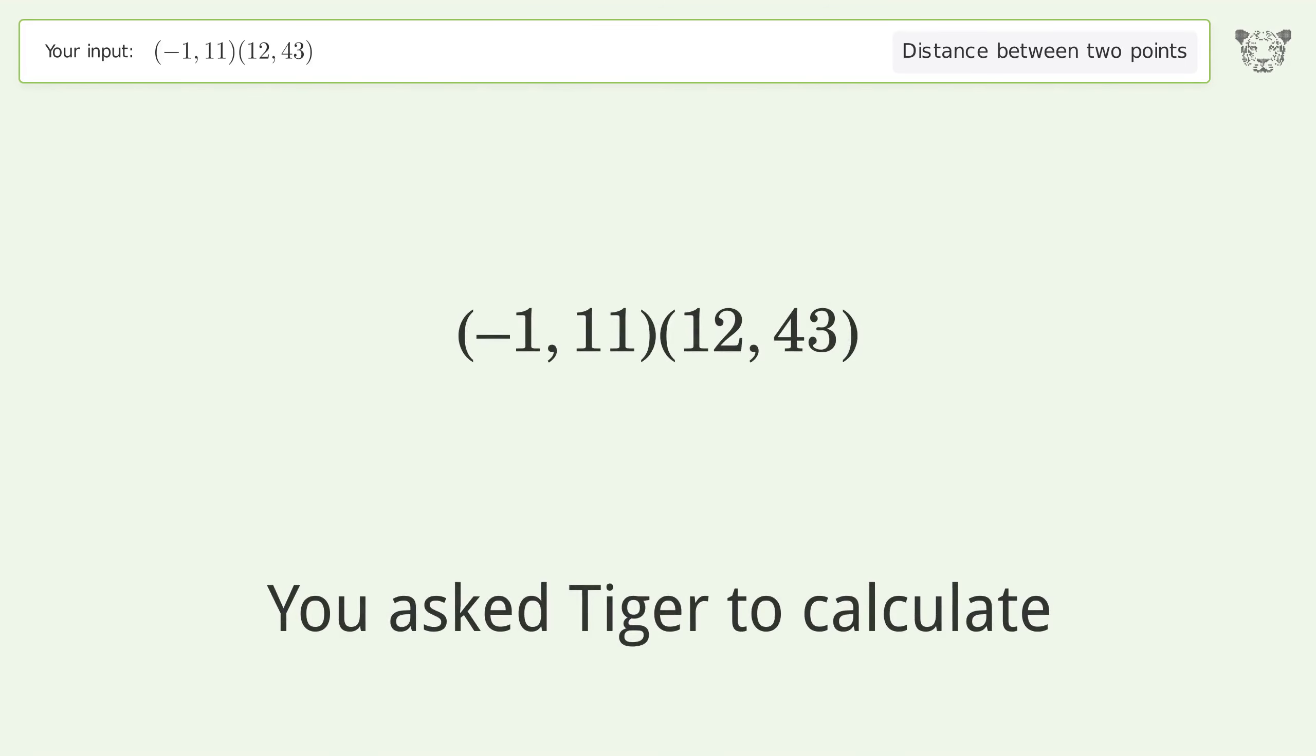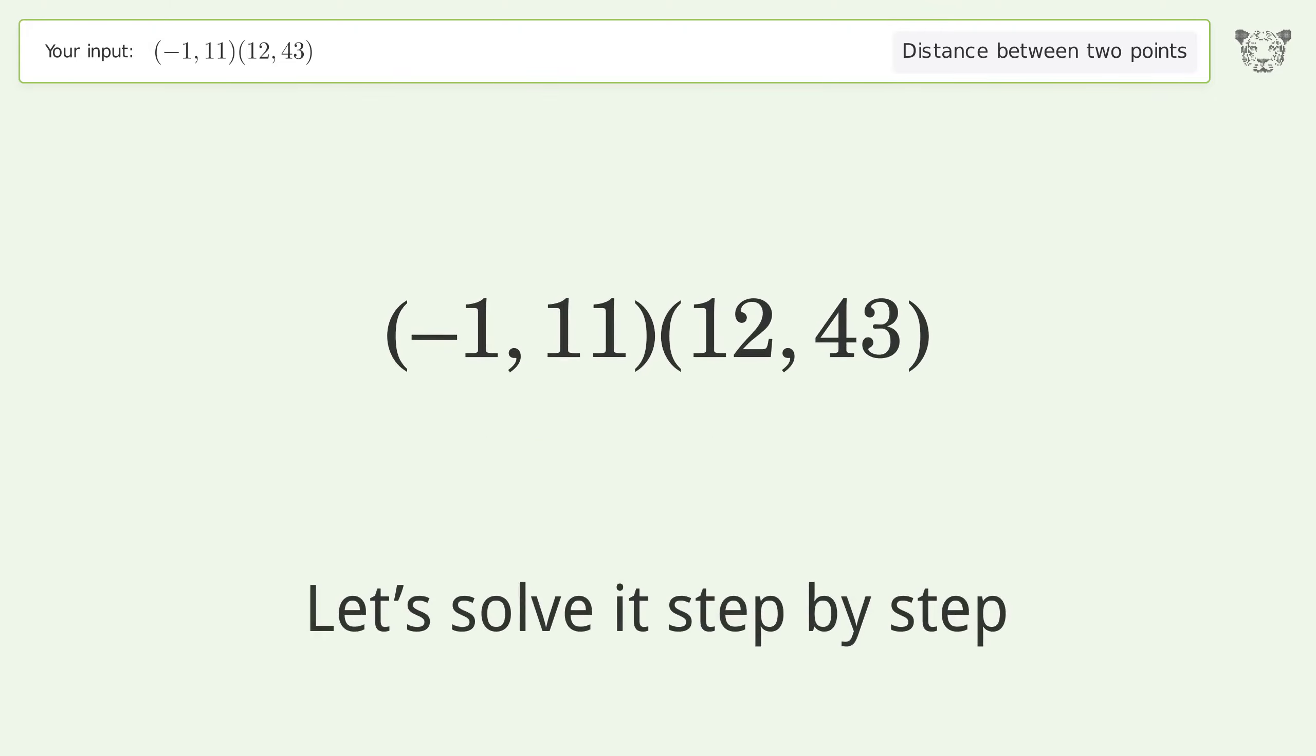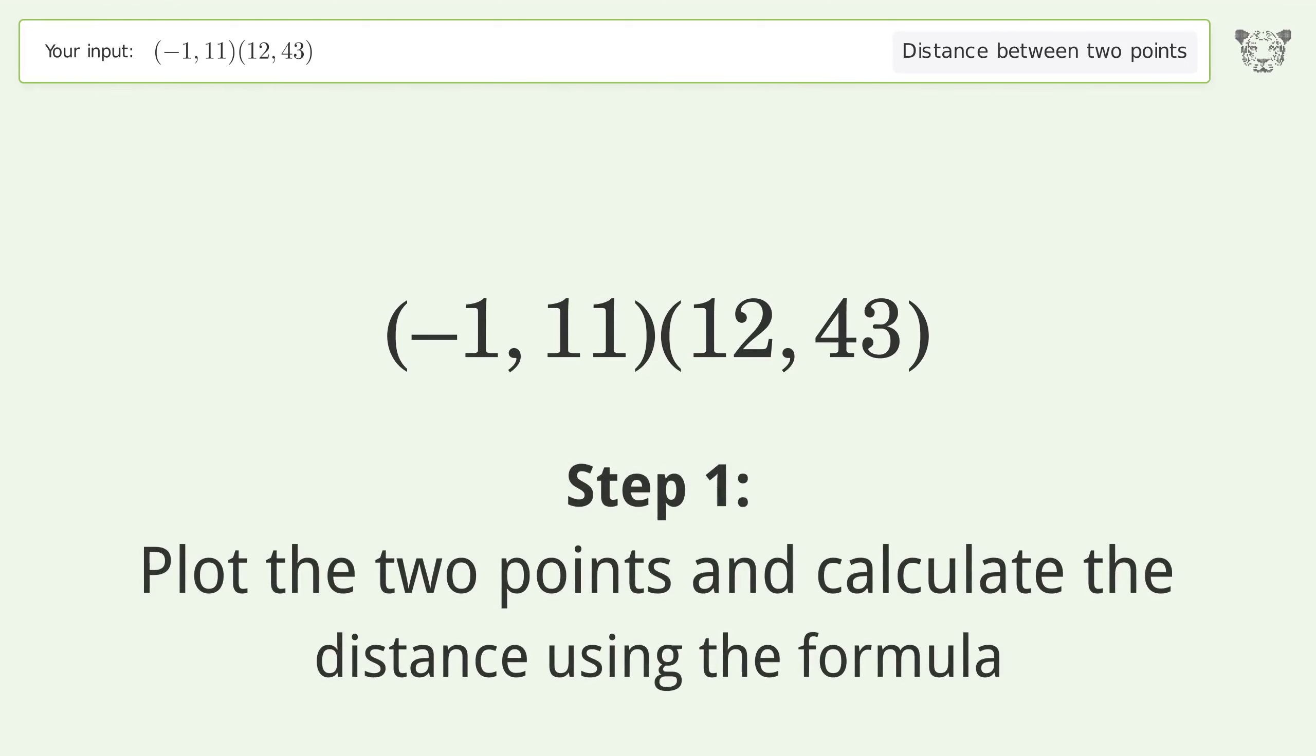You asked Tiger to calculate the distance between two points. The distance between the two points is the square root of 1193, or 34.54. Let's solve it step by step. Plot the two points and calculate the distance using the formula.